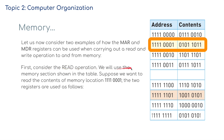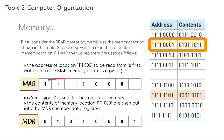First, consider the read operation. We will use the memory section shown in the table. Suppose we want to read the contents of memory location 11110001. The two registers are used as follows: the address of location 11110001 to be read from is first written into the MAR. A read signal is then sent to the computer's memory, and the contents of that memory location are then put in the MDR — the data register. This is running through buses at lightning speed.